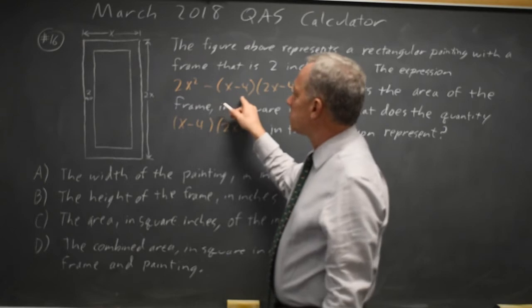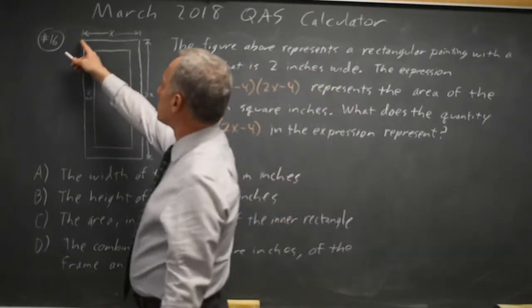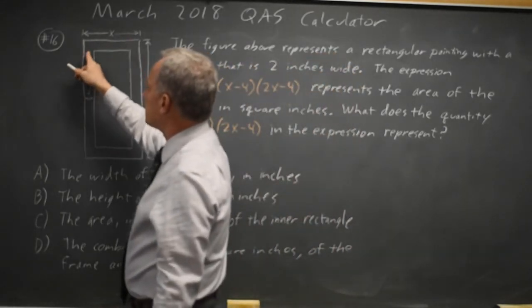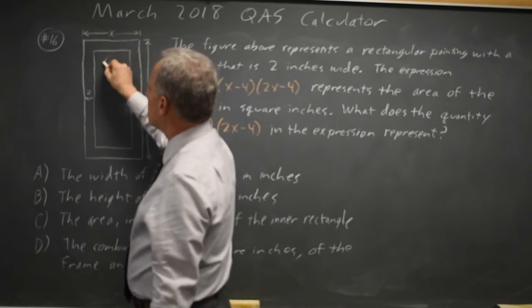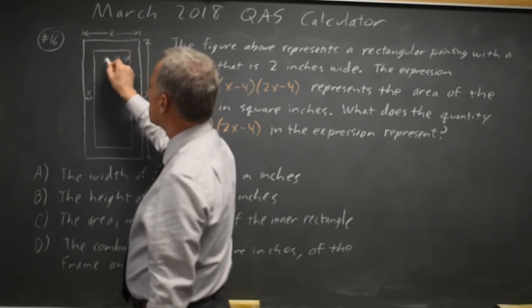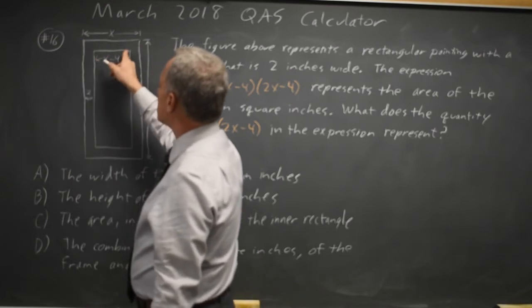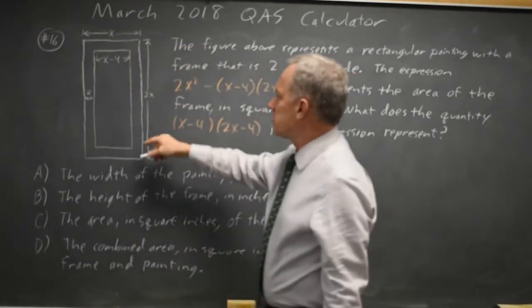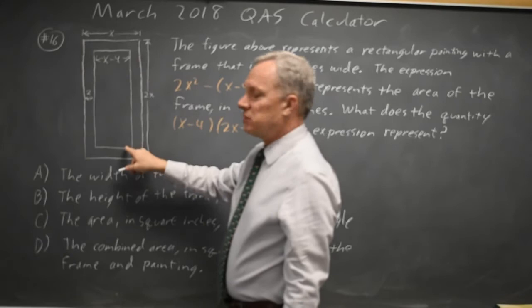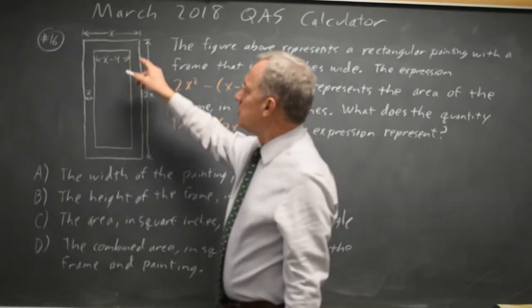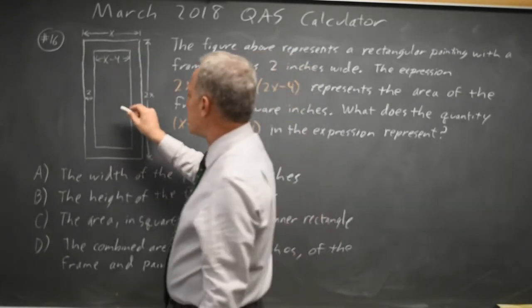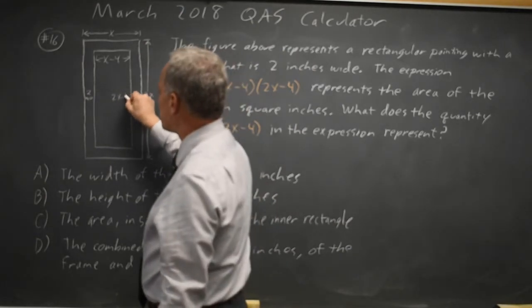From that we're subtracting (x-4)(2x-4). If this side is x and the frame is 2 inches on each side, we get x - 4 on the inside of the frame. If this side is 2x and we have 2 at the top and 2 at the bottom, we're less by 4 total, so this is 2x - 4.